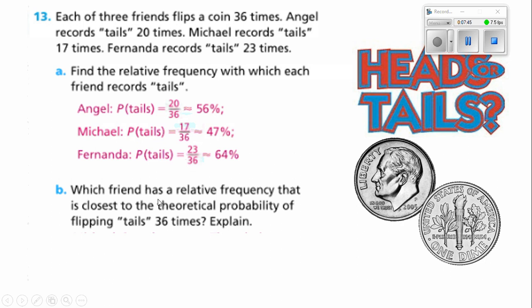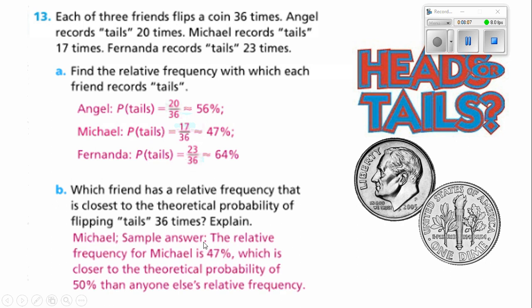Part B says which friend has a relative frequency that is closest to the theoretical probability of flipping tails 36 times? Remember, if we flip it, we're always going to say that flipping of tails is 50%. So which one of these is closest to 50%? I'm going to say Michael. And I'm right. The relative frequency for Michael is 47%, which is closer to the theoretical probability of 50% than anyone else's relative frequency.